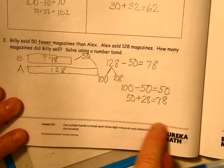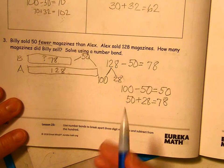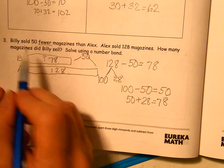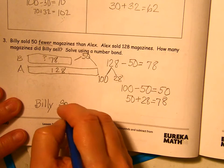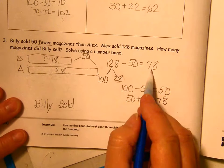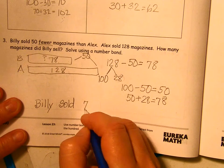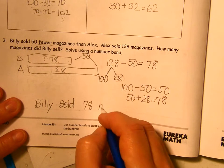So that's where we need to write our response. Billy sold how much? 78 magazines.